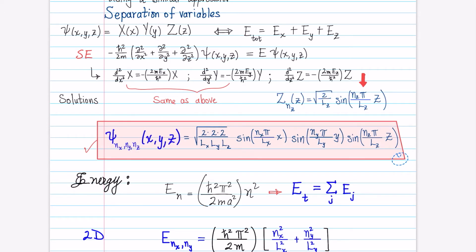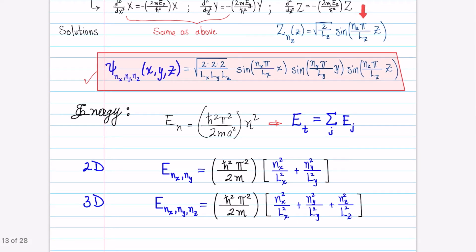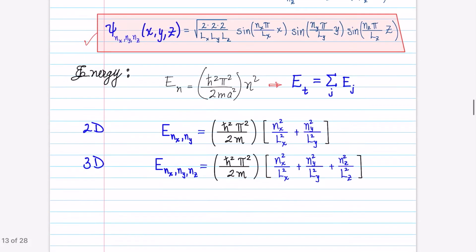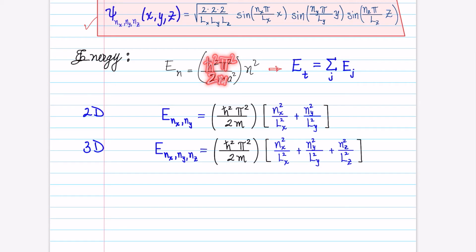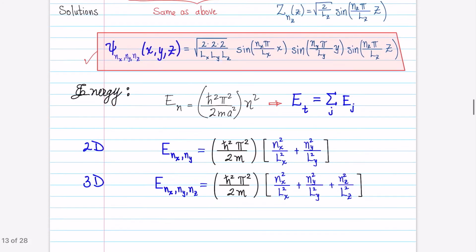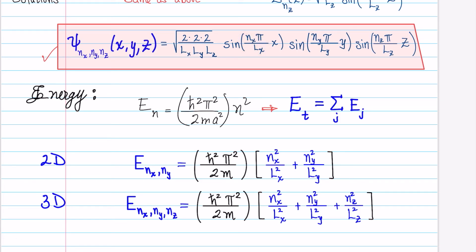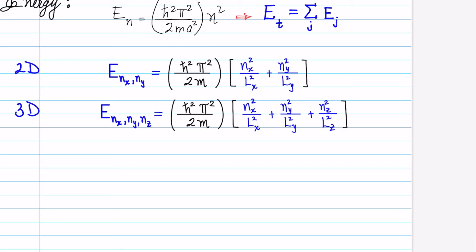What happens with the energy? The energy, in a similar fashion, is going to be the sum of contributions from the motion of the particle in each one of those directions. So if we have a two-dimensional case we have two terms, and if we have a three-dimensional case we have three terms. For the 1D case, we only have one term — which was the equation we had for the one-dimensional case. Since those constants are not going to be changing for any dimension, I can factor out the constant term, and the only things that change are the quantum number and the length of the box in that particular direction. For the three-dimensional case, we have a constant, and then the contributions from each direction added up together — the quantum number in that direction squared divided by the length of the box in that direction squared — and that form repeats for each one of those directions.